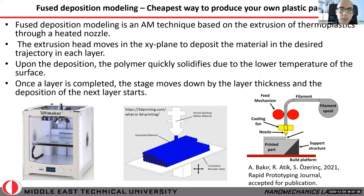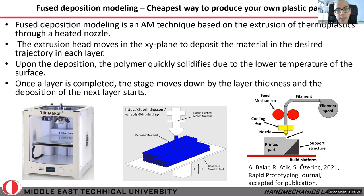Most of you may be familiar with fused deposition modeling, especially if you are in the additive manufacturing community. FDM is one of the cheapest and most effective ways of producing a plastic part. The idea is relatively simple: you have a heated nozzle, you feed your filament — which must be a thermoplastic polymer — through the nozzle, the plastic melts, and then it is deposited onto the surface.